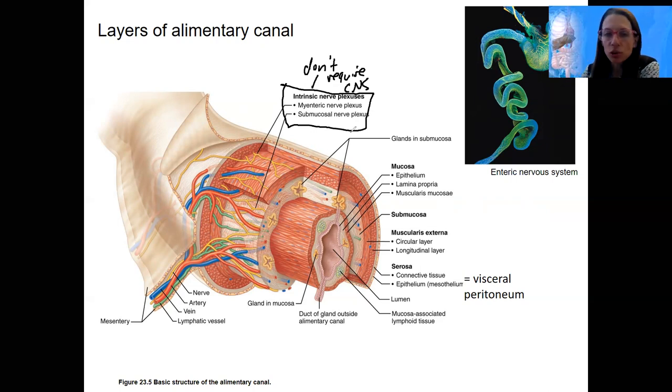So these are going to control motility. So submucosal is going to control like mucus production. Myenteric is going to control mostly motility. Smooth muscle control movement through the intestine.